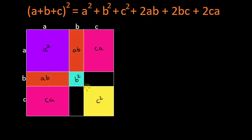And after that we have these two black rectangles. Each of them have length equal to c and breadth equal to b, so the area will be bc for each of them.